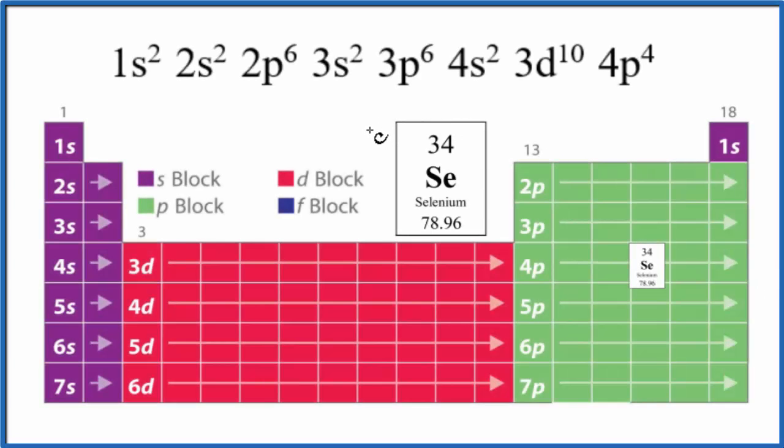In this video we'll write the electron configuration for Se, selenium. We'll also write the electron configuration for the Se 2 minus ion. So let's do Se first. We look at Se on the periodic table. The first thing we want to figure out is how many electrons do we have to write the electron configuration.